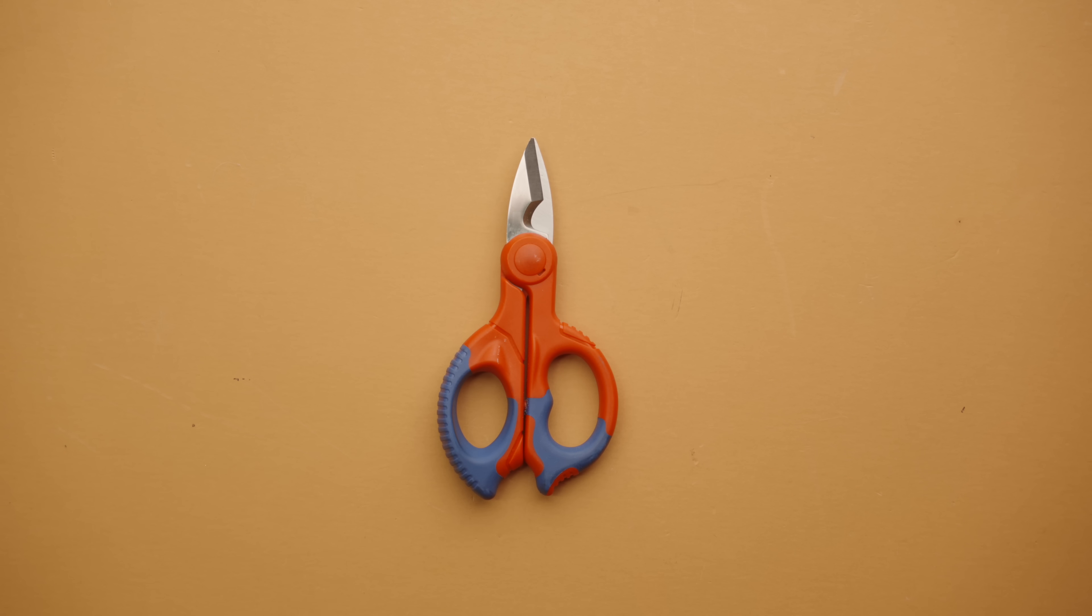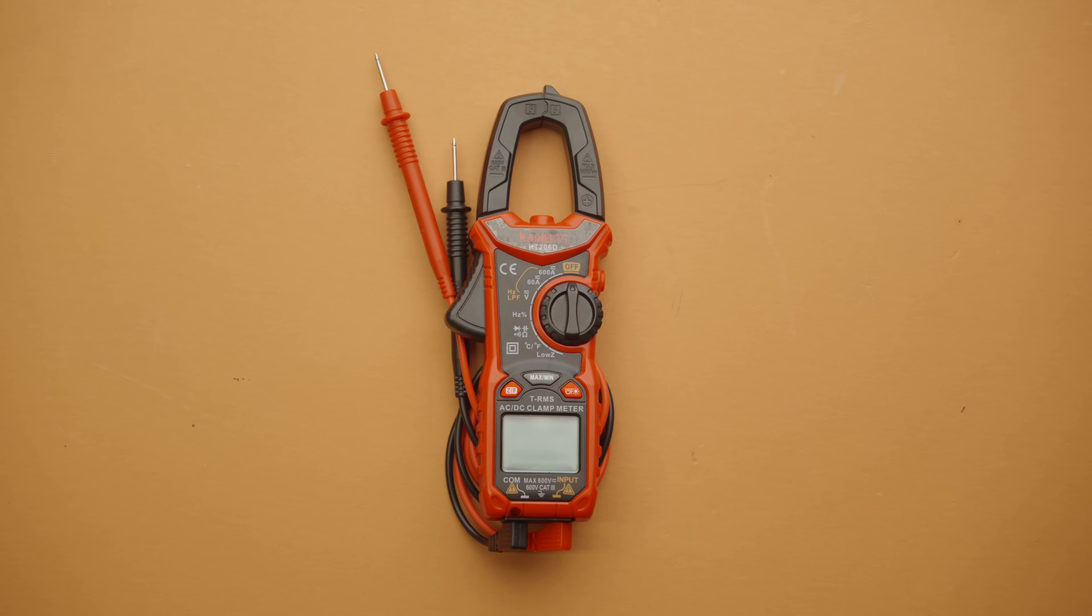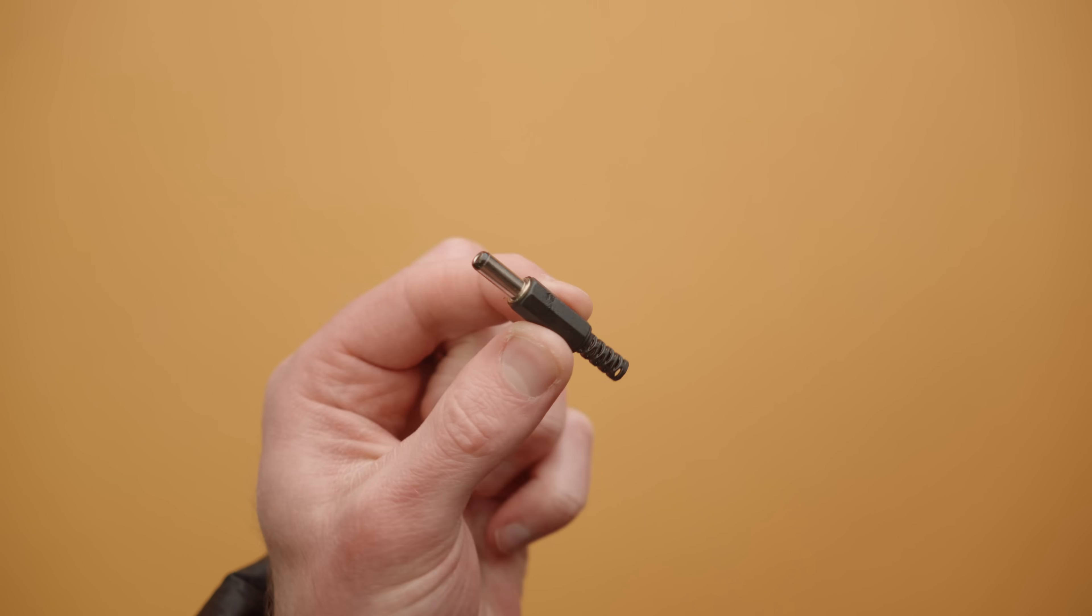You also need a couple of tools, including some way to heat up the heat shrink, whether that be a heat gun like this one or a lighter also works great. You'll need a pair of scissors if you're going to make your own connectors, some kind of wire stripper or cutter, a soldering iron, and a multimeter with a continuity mode.